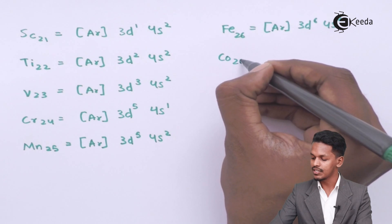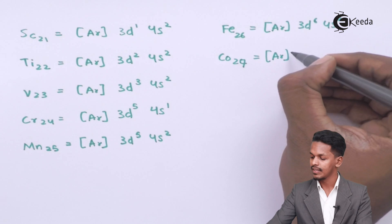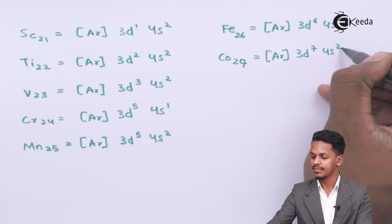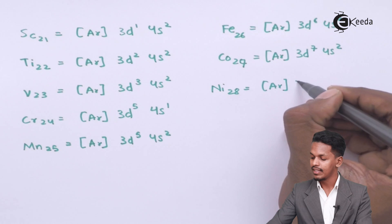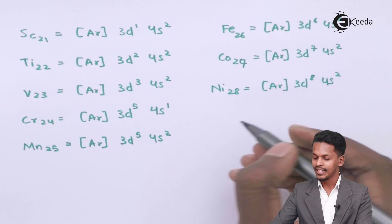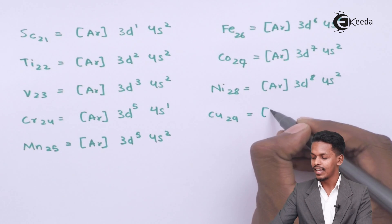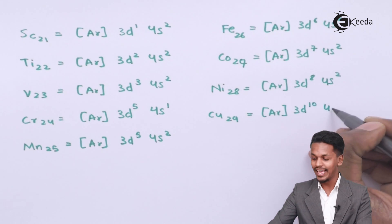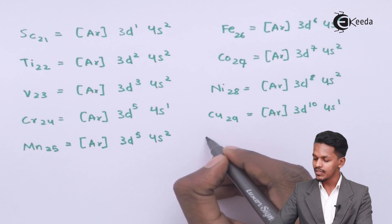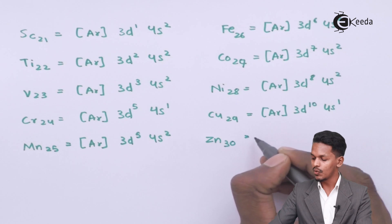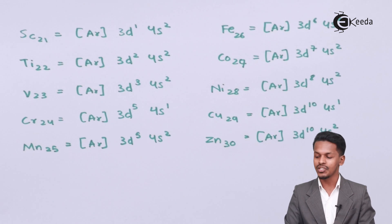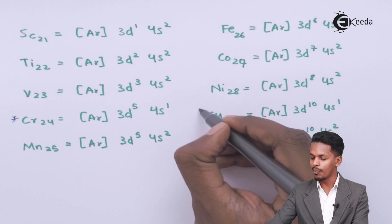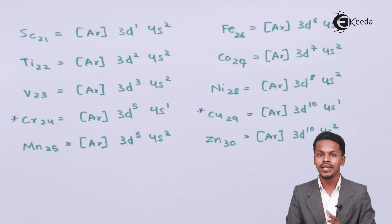Cobalt (atomic number 27): [Ar] 3d⁷ 4s². Nickel (atomic number 28): [Ar] 3d⁸ 4s². Copper (atomic number 29): [Ar] 3d¹⁰ 4s¹ — another abnormal configuration. Zinc (atomic number 30): [Ar] 3d¹⁰ 4s². So chromium and copper both show abnormal electronic configurations, which will be discussed in a separate lecture.